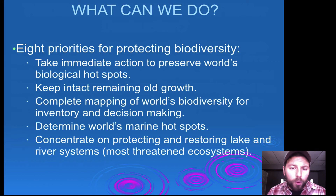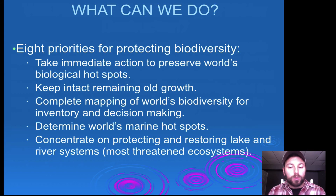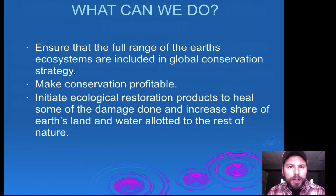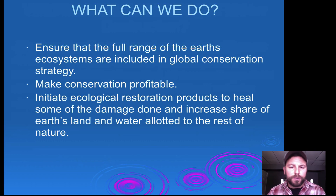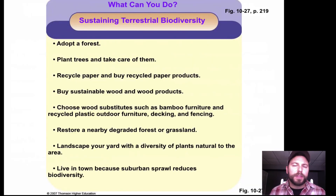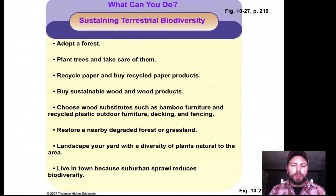Eight priorities for protecting biodiversity: take immediate action to preserve the world's biological hotspots; keep intact the remaining old-growth forests; complete mapping of the world's biodiversity for inventory and decision-making, since knowing which species are in certain areas helps create a hierarchy of protection priorities; ensure that the full range of Earth's ecosystems is included in global conservation strategy, as every area provides certain ecological services; make conservation profitable rather than viewing it as money with no return on investment; and take personal actions such as adopting forests, planting trees, and landscaping yards to increase local biodiversity.